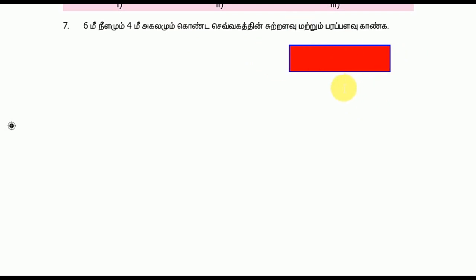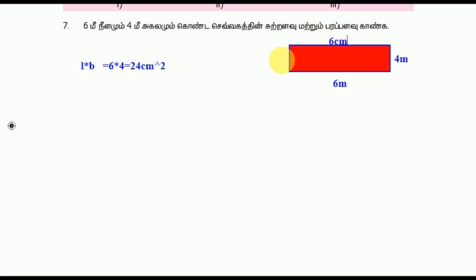Let's get into this one. 6m is 4m. So this is 6m and this is 4m. Let's get into this one — that is the same thing. So what is the same thing? L into b, that is 4 into 1. As I know, the same thing is 4. If you see how much is possible, it is 20 meters. So the answer is 24 centimeters.